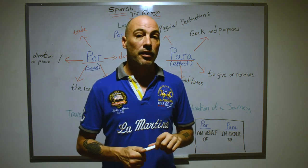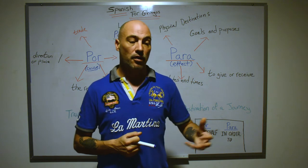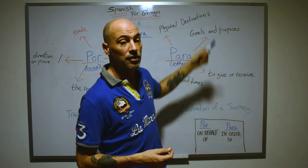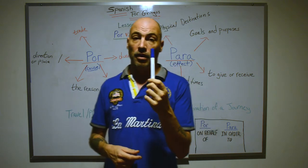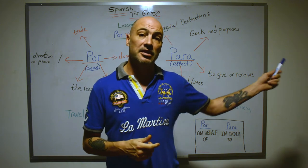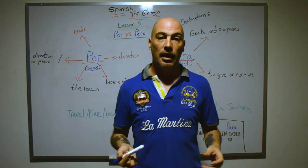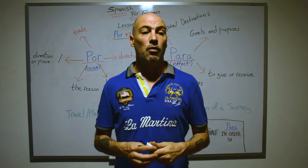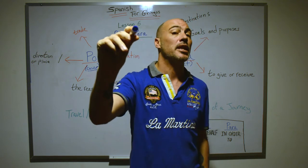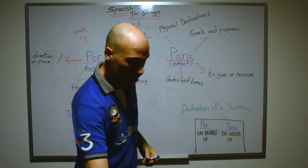Think of it this way: if somebody is going to receive something, it falls under destinations. If I give this marker to my friend Steve, Steve is the destination — this marker is going from my hands to Steve's hands. Communication is another example: if I'm talking to you, you are the destination of my communication. Think of an arrow pointing in the direction of the destination — the communication is intended for you, the viewers.